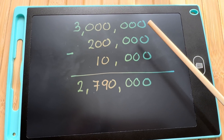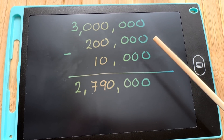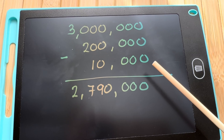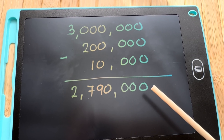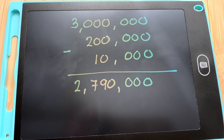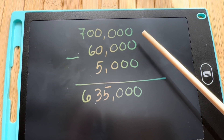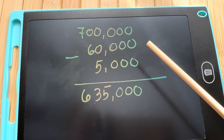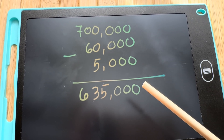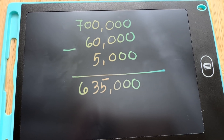Next, 3,000,000 minus 200,000 minus 10,000 is equals to 2,790,000. 700,000 minus 60,000 minus 5,000 is equals to 635,000.